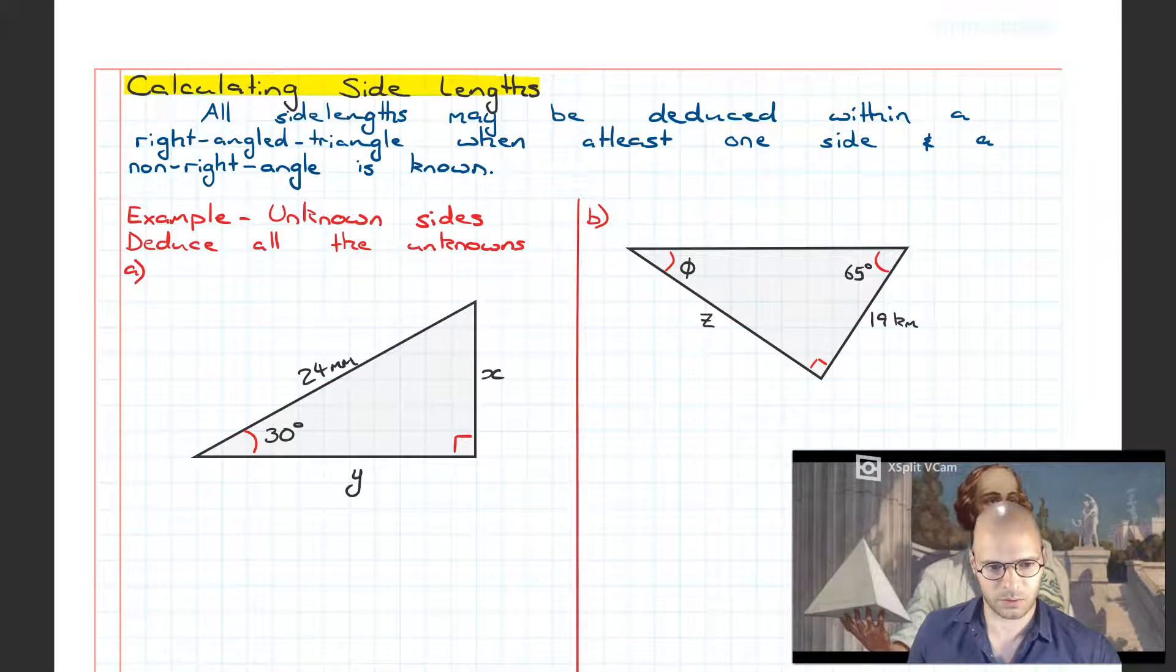Welcome to this video on the topic of trigonometry. In this video, we're going to look at how we can use trigonometry to calculate unknown side lengths within right-angled triangles when we're given at least one side length and an angle of interest.